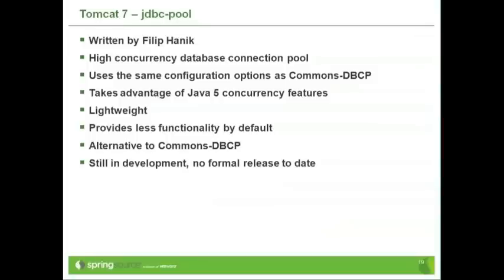Available to use with Tomcat 7, if you are prepared to build it from source, is a replacement connection pool written by Filip. It's really aimed at environments where you have a high number of concurrent database connections. One of the issues with commons DBCP is that it's written to run on Java 1.3, which means it can't take advantage of the concurrency libraries in Java 5.